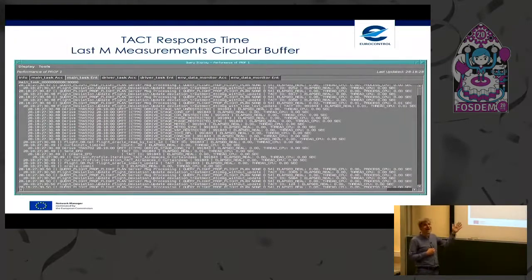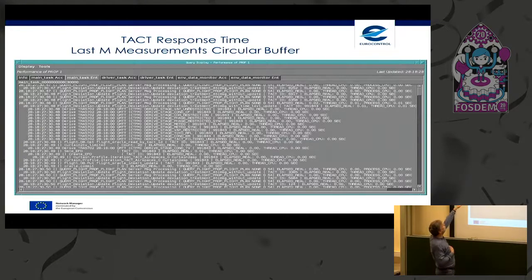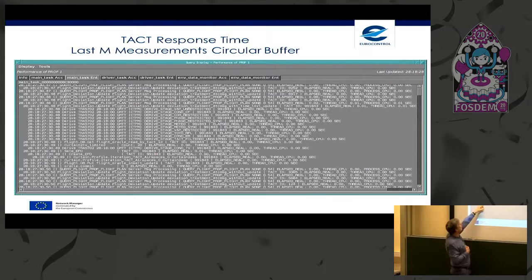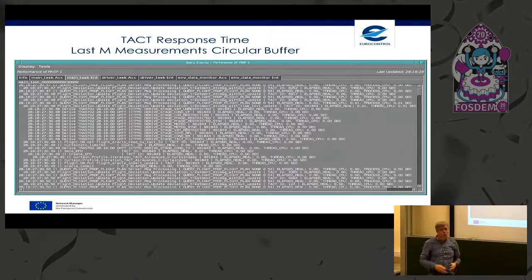This is an example of online access to this data structure — a screen allowing interactive inspection, for example during the night when on call. You see a tree of actions: received a flight plan, had a flight deviation, performed several derivation phases for trajectory calculation, read the flight in the database, calculated other concepts, distributed data, and committed to the database. We can track the details of what happened in the last M measurements.